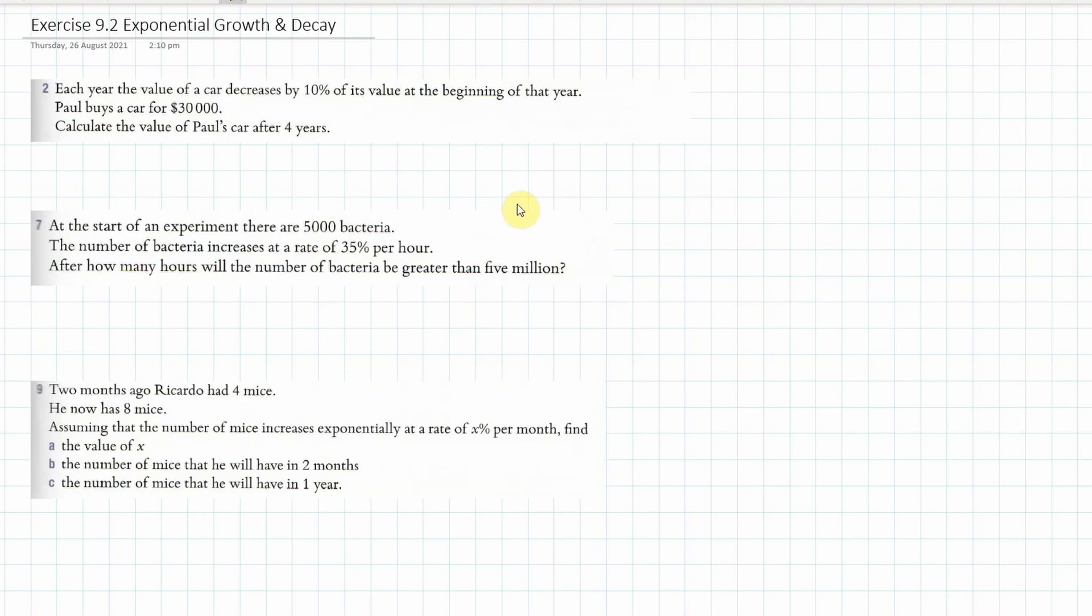The first question I have today is a decay question. I kind of mentioned this in the previous video. Each year the value of a car decreases by 10% of its value at the beginning of that year. Paul buys a car for $30,000 and we've got to calculate the value of the car after four years.